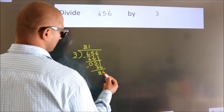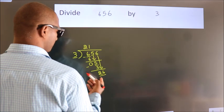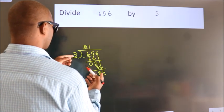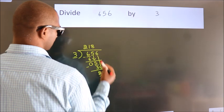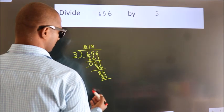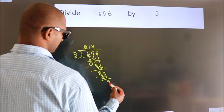So, 6 down. So, 26. A number close to 26 in 3 table is 3 8s, 24. Now, we subtract. We get 2.